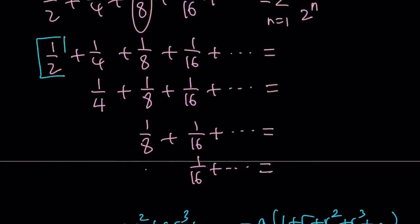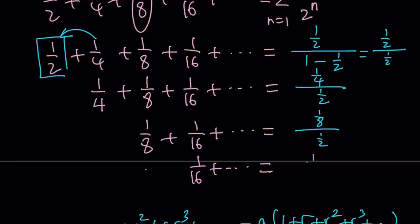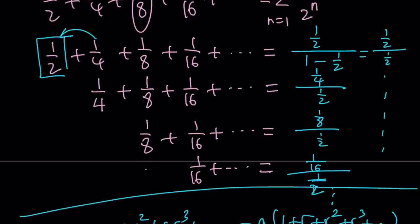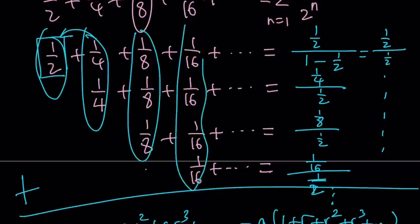The first series is 1 half divided by 1 minus 1 half, which is 1 half divided by 1 half. Don't simplify it yet — leave it like that because we're going to get a pattern. The second one is going to be 1 fourth divided by 1 half. The third one is going to be 1 eighth divided by 1 half. The fourth one is going to be 1 sixteenth divided by 1 half, and so on. When we add all of these up, we get 1 half plus 2 fourths plus 3 eighths plus 4 sixteenths, so on and so forth.